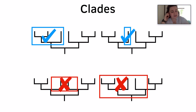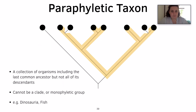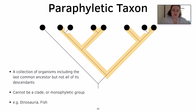The same goes with the bottom right — it is not a clade, because it involves too many different ancestral lineages. A paraphyletic taxon is a collection of organisms including the last common ancestor but not all of its descendants, so it cannot be a clade or monophyletic group. Examples include Dinosauria and fish.